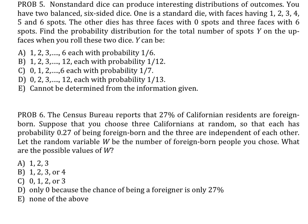In question 6, we're asked about this random variable, the number of foreign-born people you would choose if you chose a random sample of 3 Californians and you determined if they were foreign-born or not.